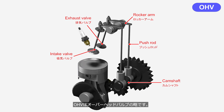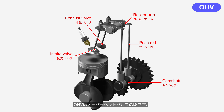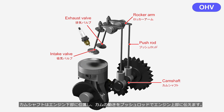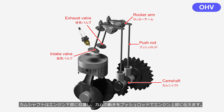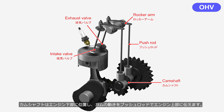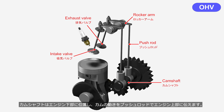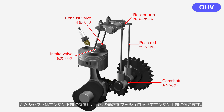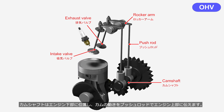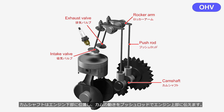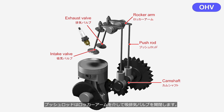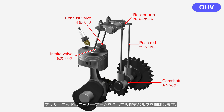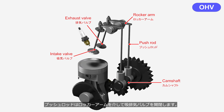OHV stands for overhead valve. The camshaft is located at the lower side of the engine, and it transfers the cam's motion to the top of the engine using pushrods. The pushrods open and close the intake and exhaust valves via the rocker arms.